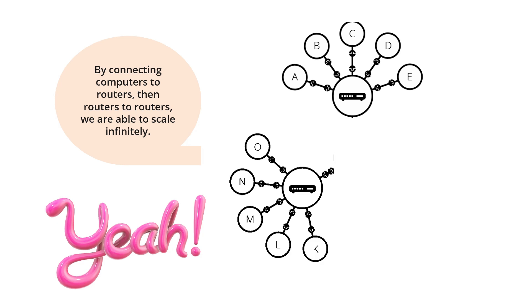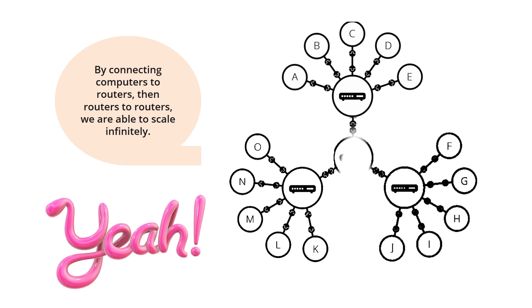We are connecting routers to routers, which in turn are connected to many computers, and we can scale the network infinitely. Like this, the internet is built — it consists of billions of computers connected together. Such a network comes very close to what we call the internet, but we are missing something.